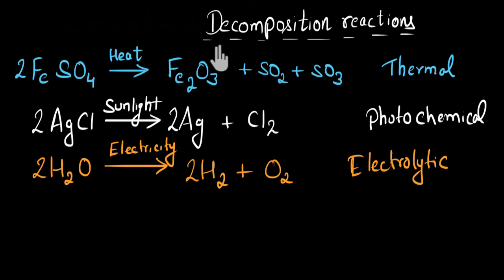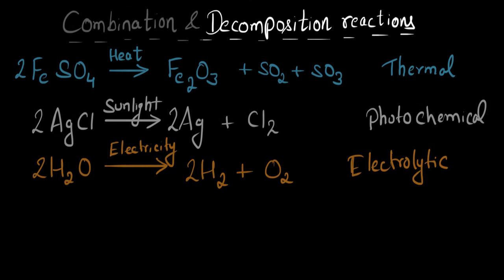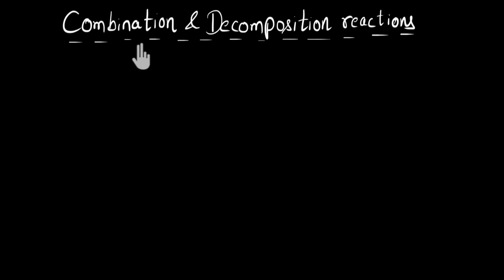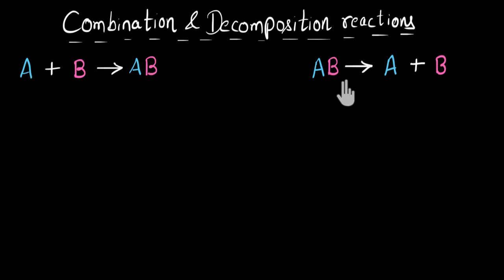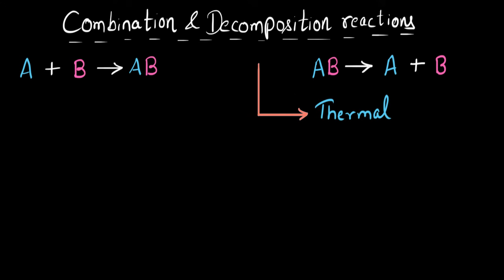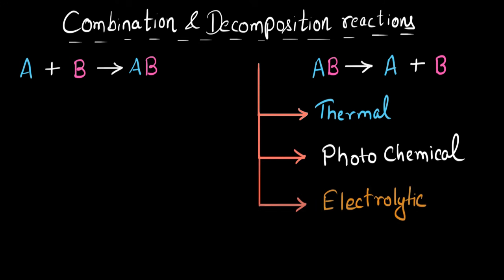Let's summarize: Combination reactions are those in which multiple reactants combine to give one single product. Decomposition is the opposite — one reactant decomposes into multiple products — and generally requires energy because we have to separate atoms. If energy is given as heat, it's thermal decomposition; if as light, it's photochemical decomposition; and if as electricity, it's electrolytic decomposition.